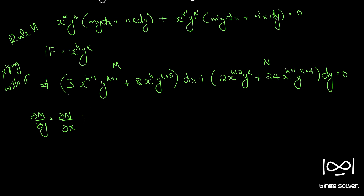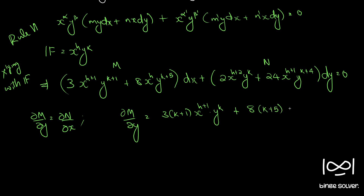Finding ∂M/∂y: it equals 3 into (k plus 1) into x raise to h plus 1 into y raise to k, plus 8 into (k plus 5) into x raise to h into y raise to k plus 4. And ∂N/∂x equals 2(h plus 2) into x raise to h plus 1 into y raise to k, plus 24 into x raise to h into y raise to k plus 4.